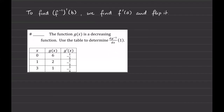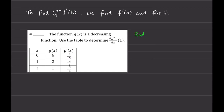Let's look at a couple of examples. We have a function that is decreasing — decreasing is a hidden way of saying it's one-to-one, meaning we can find the inverse. We're asked to determine dg⁻¹/dx evaluated at 1. I'll translate this as: find g⁻¹ prime of 1, which equals 1 over g'(g⁻¹(1)).